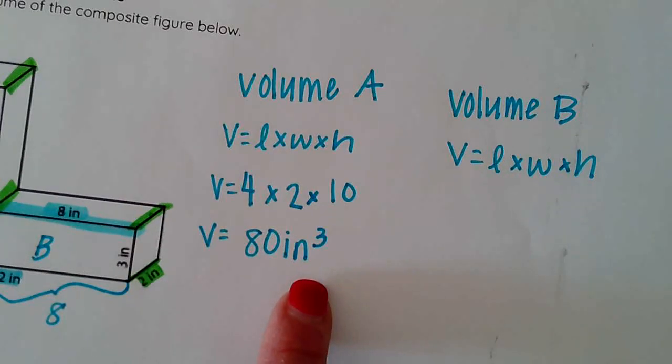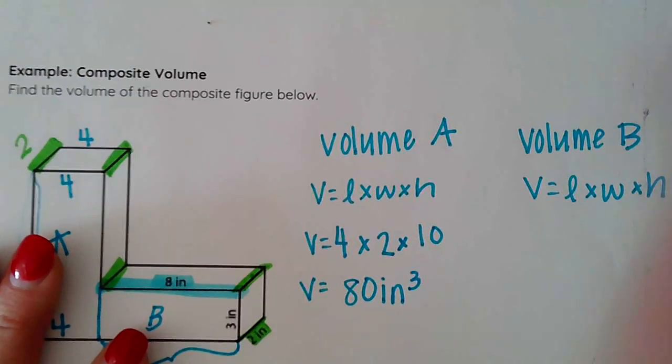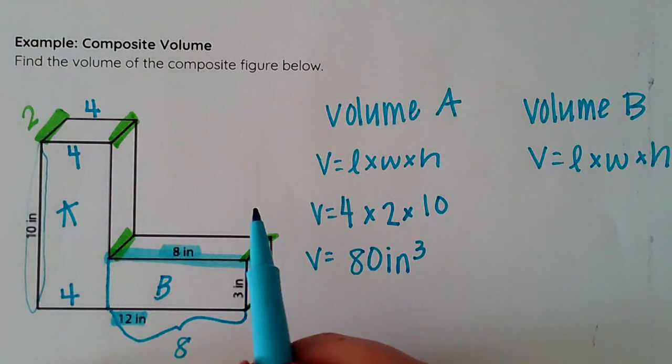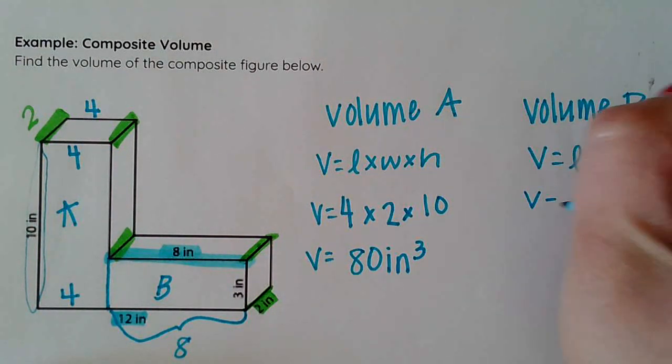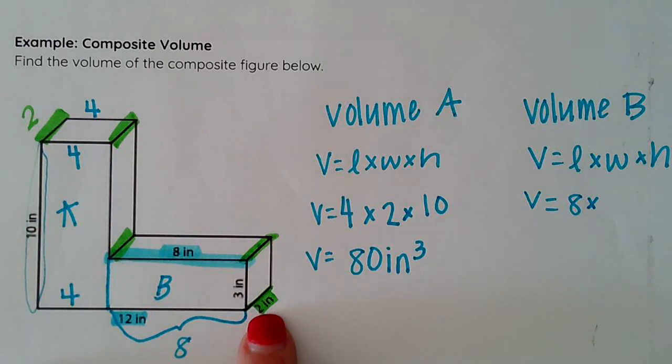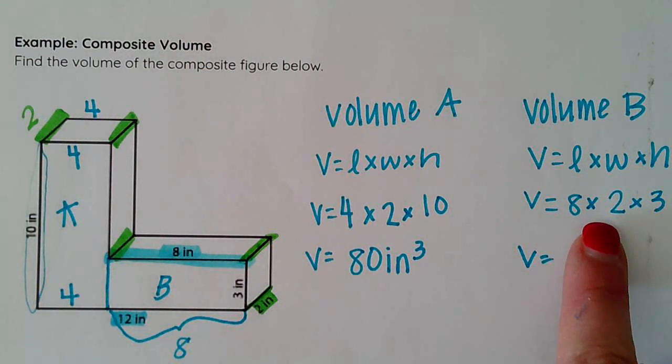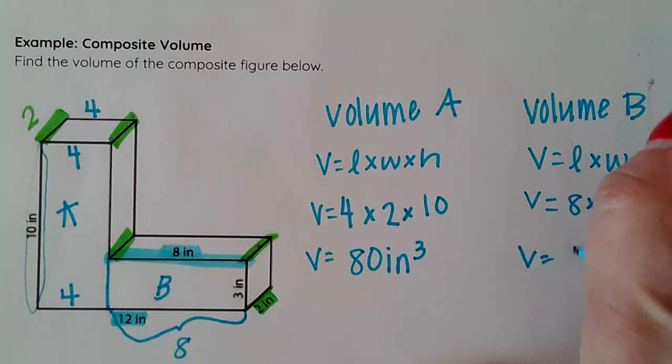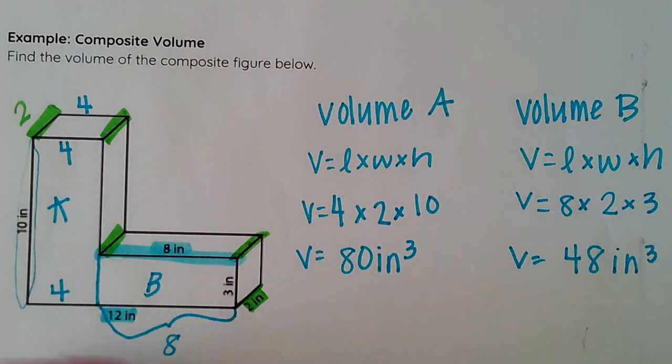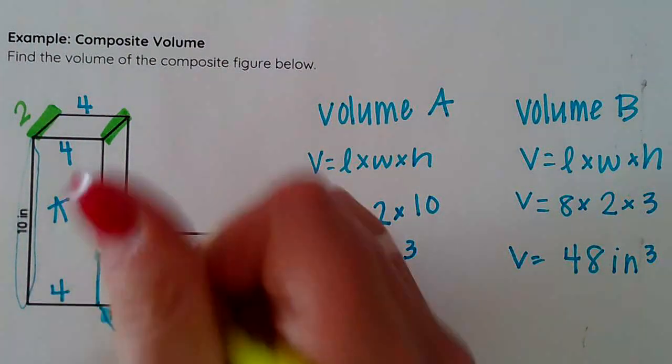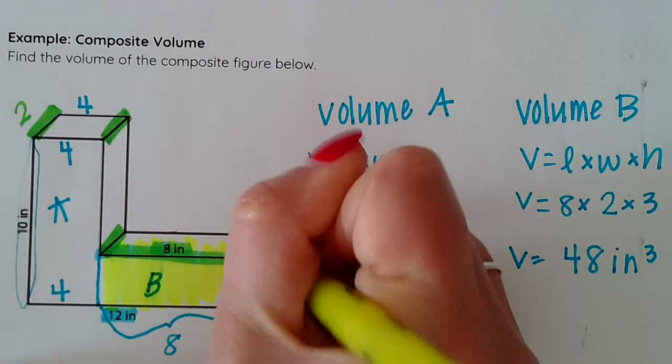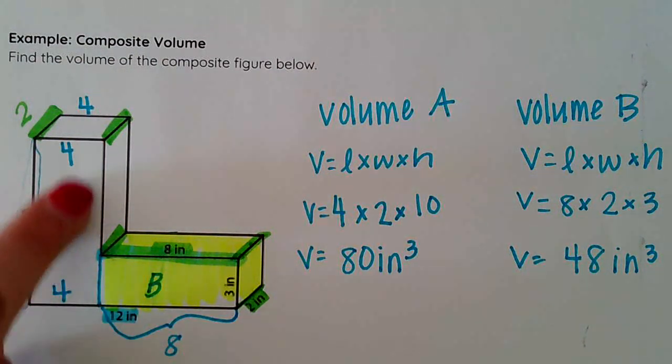Now I got to fill out my volume for figure B. Again, I already know that my length is eight. My width, I already know is two. And here I know that my height is three. So I say, okay, four times two is 16. And I multiply that by three, getting me 48 inches cubed. So this rectangle here, this one here is 48, whereas this one is 80.